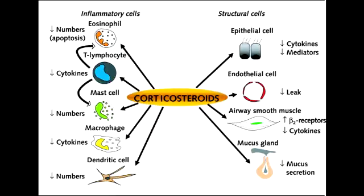What is the clinical use of corticosteroids? Corticosteroids are used as first-line therapy for chronic asthma. Inhaled steroids are used in asthma control, whereas oral steroids are used in the acute exacerbation of asthma.